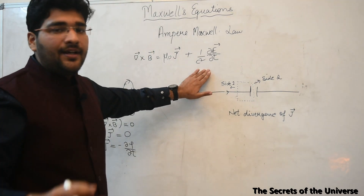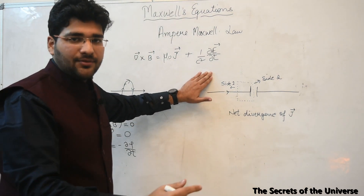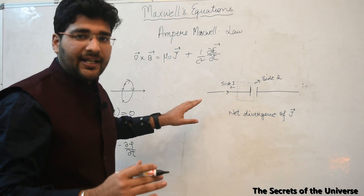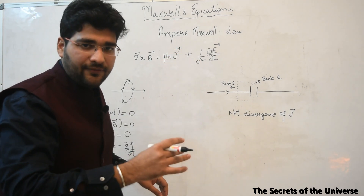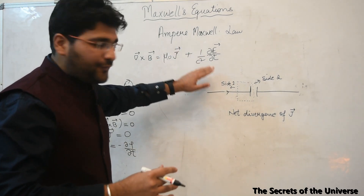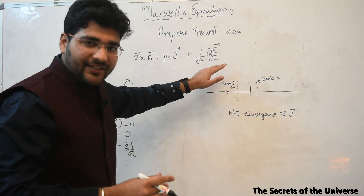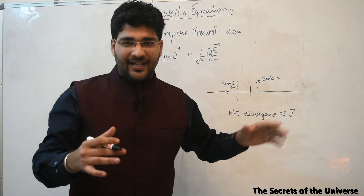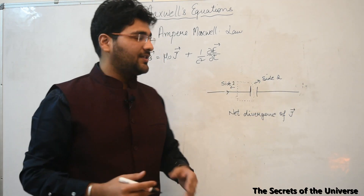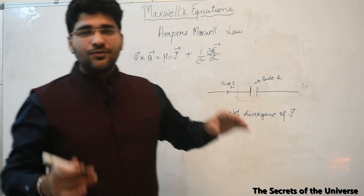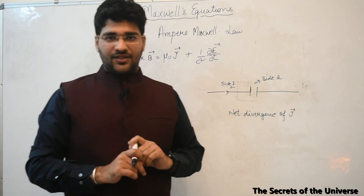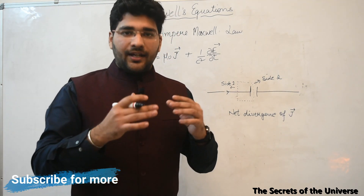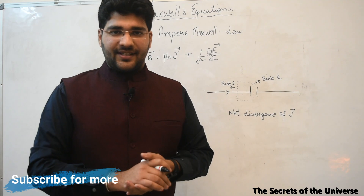This added term creates a beautiful symmetry in Maxwell's equations. Faraday's law showed that a changing magnetic field produces a curling electric field. Now, with Maxwell's addition, a changing electric field produces a curling magnetic field. This is the level of symmetry achieved in Maxwell's equations. That was all about Maxwell's equations — thank you for watching.